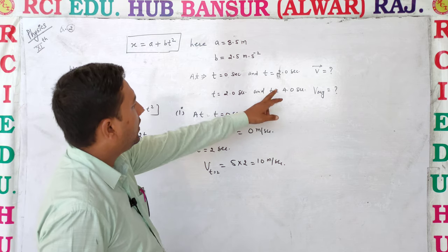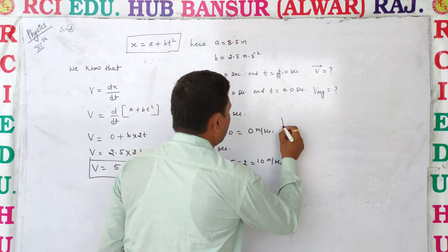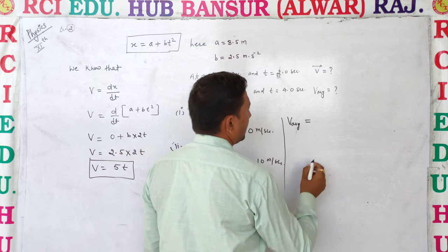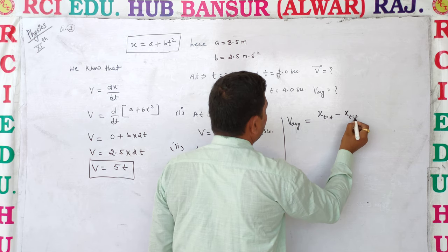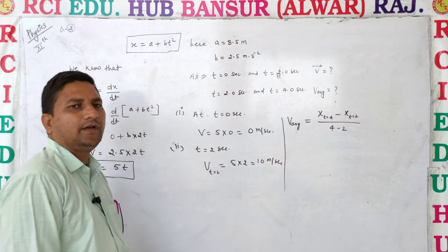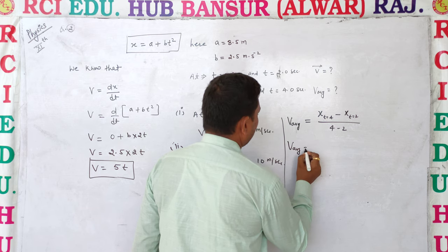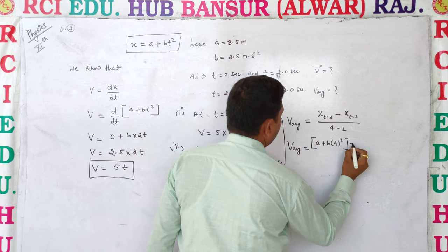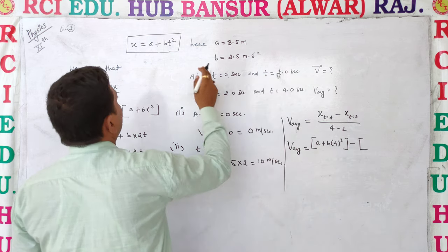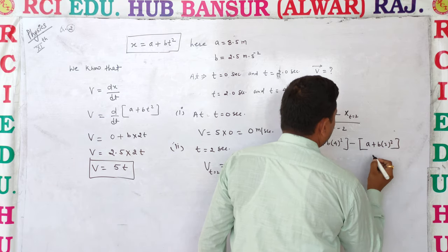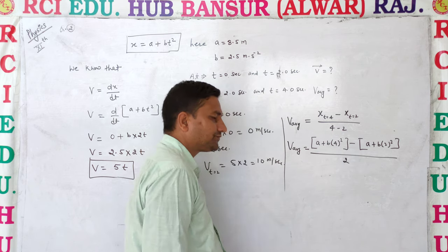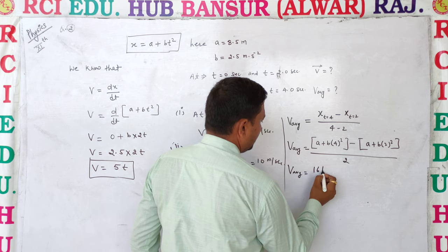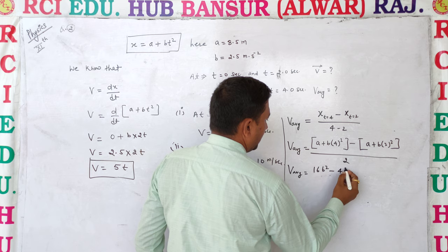For t equal to 2 and t equal to 4, we need to find the average velocity. The formula for average velocity is: v average is equal to x(t=4) minus x(t=2), divided by 4 minus 2. Substituting: x(t=4) is a plus b times 4 squared, and x(t=2) is a plus b times 2 squared, divided by 2.